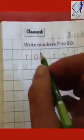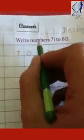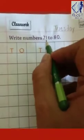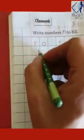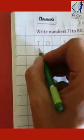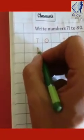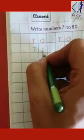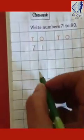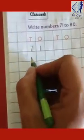Okay. Now we have to start the work. What is written here, children? Write numbers 71 to 80. So you have to first write 7 and then 1. Seven will be on the tens square, and 1 will be on the ones square. Like this: 7-1, 71.